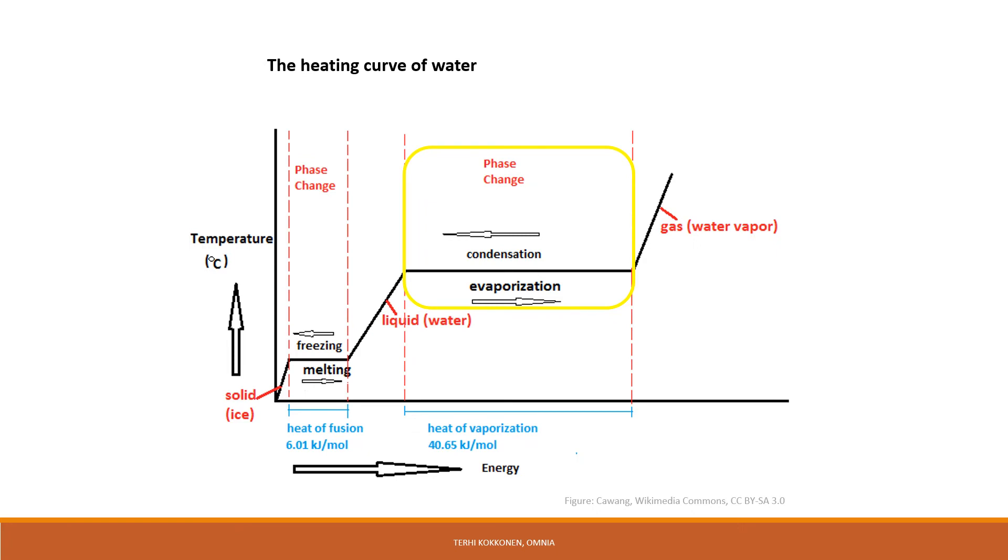The same thing happens when you heat water to the boiling point. The water will heat until the temperature reaches 100 degrees Celsius. But when water is boiling, adding heat does not increase its temperature. At the boiling temperature, adding heat energy converts the liquid into a gas without raising the temperature.